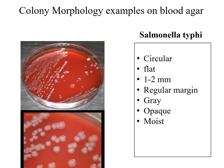Here we have Salmonella typhi. The colonies are circular and flat, 1 to 2 mm in diameter, with regular margins. They are grayish in color, opaque, and moist.